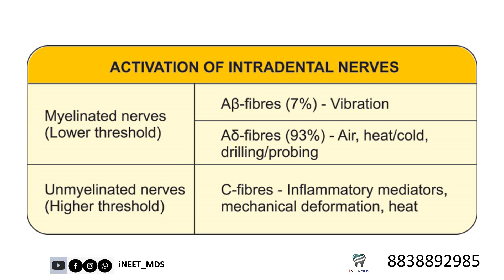Temperature-related sensitivity pain is A-delta fiber, pressure and vibration sensation is related to A-beta, and touch sensation involves both A-beta and A-delta. To summarize: sensitivity pain is A-delta, whereas the pain related to local anesthesia injection is related to C fibers.